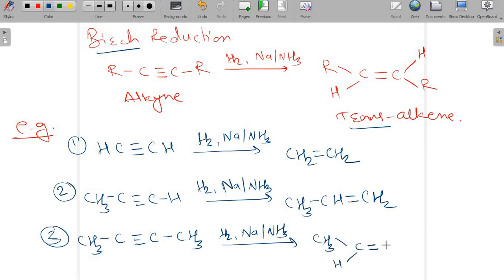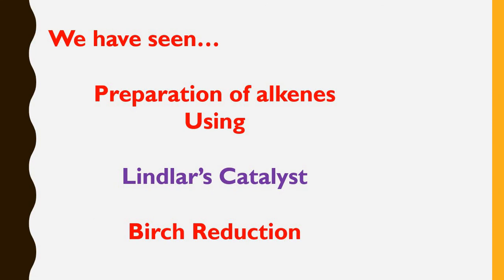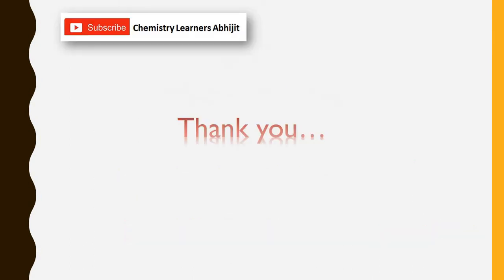The trans product of 2-butyne is trans-2-butene: CH3 and CH3 groups are on opposite sides of the double bond, confirming it is trans-2-butene. In this way, Birch reduction also produces alkenes but with trans geometry from alkynes. We have seen the preparation of alkenes from alkynes using Lindlar's catalyst, which gives cis-alkenes, and Birch reduction, which gives trans-alkenes. With this we conclude this session. Thank you — if you have any doubt please post in the comment section; for notes please refer to the description.